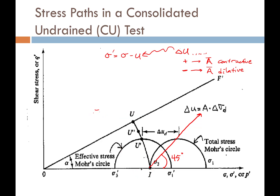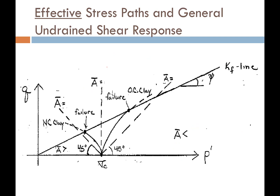The total stress path in a CU test will increase at 45 degrees, just like in the CD test, but that's no guarantee of what the effective stress path will do. The effective stress path can do whatever it wants because it's dictated by the change in pore pressure, which depends on whether the soil is contractive, dilative, or something in between. The direction of the effective stress path is what governs the behavior of the soil — when the ESP reaches the failure envelope, that's when shear failure occurs. The total stress path does not govern soil behavior.